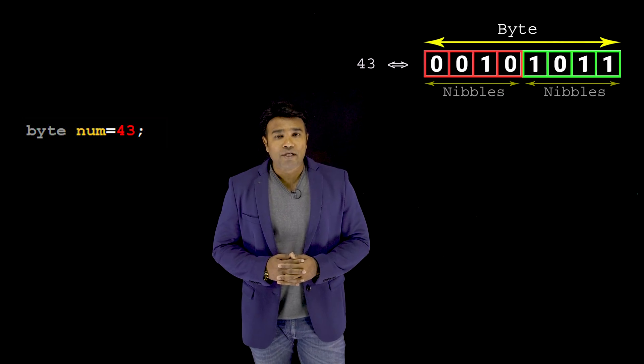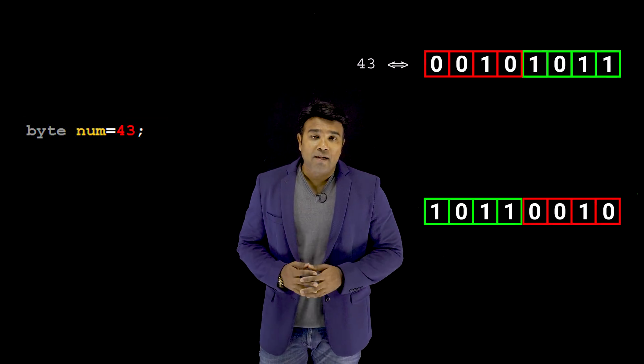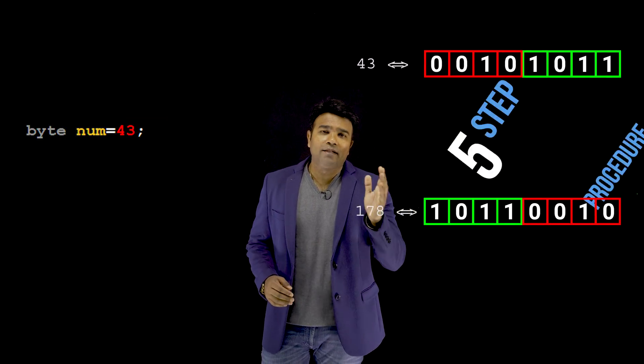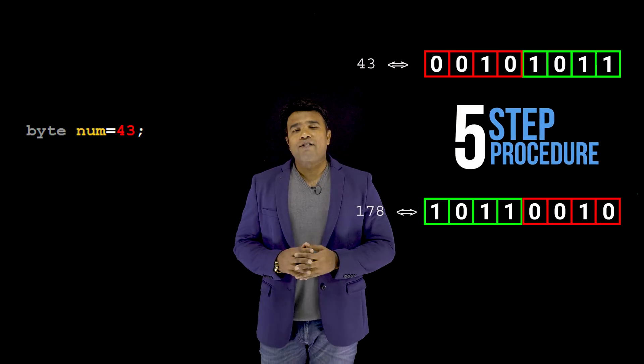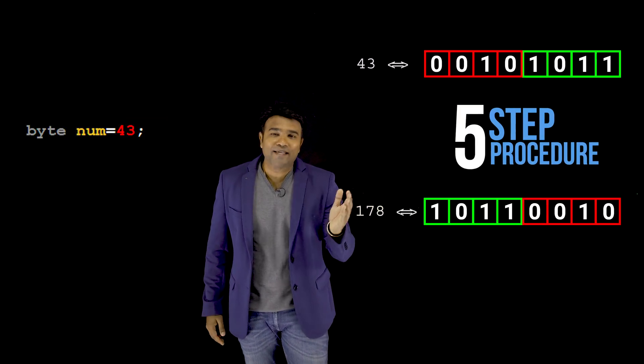Let me begin by creating a byte type variable. Internally in memory, one byte space gets allocated, and I'm going to initialize it to 43. It would be stored internally in the form of zeros and ones. A byte is made up of two nibbles, and all I have to do in this program is swap the nibbles by applying the five-step procedure.